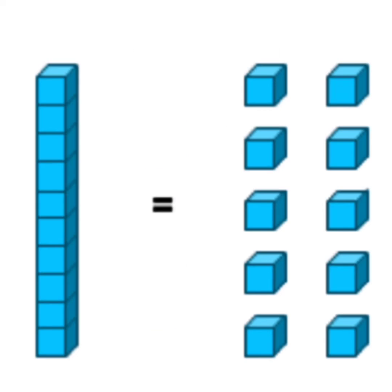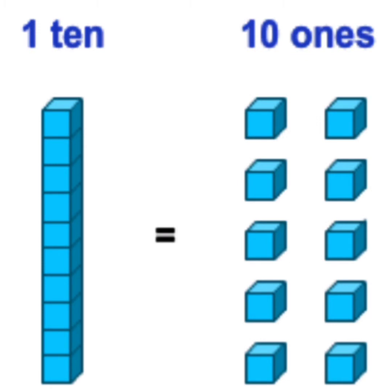10 blocks, right? So we can say this as 10 ones equal to 1 ten. That is small 10 pieces put together and we got a big stripe of 1 ten.